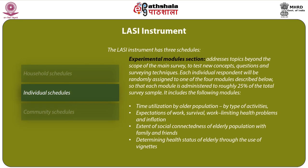The experimental module section addresses topics beyond the scope of the main survey to test new concepts, questions and surveying techniques. Each individual respondent is randomly assigned to one of four modules so that each module is administered to roughly 25% of the total survey sample. The four modules include: first, time utilization by older population by type of activities; second, expectations of work, survival, work-limiting health problems and inflation; third, extent of social connectedness of elderly population with family and friends; and fourth, determining health status of elderly through the use of vignettes.